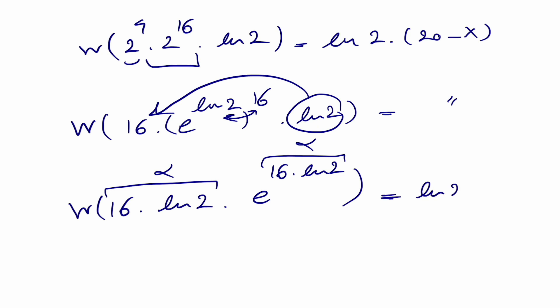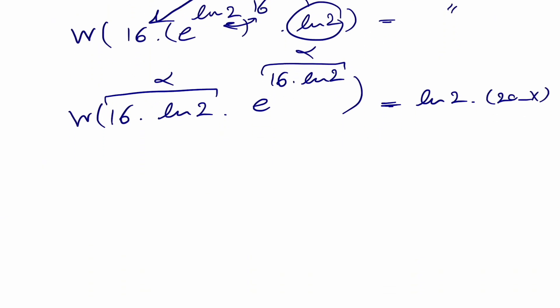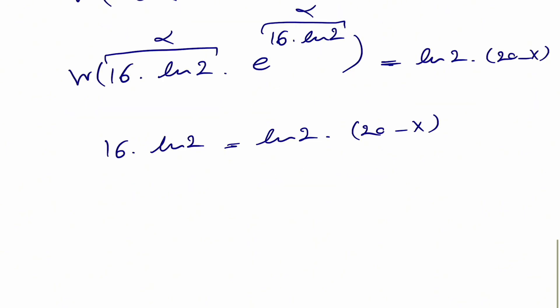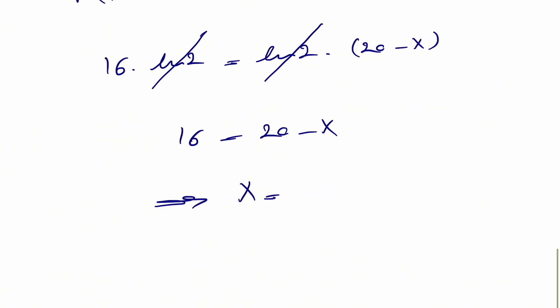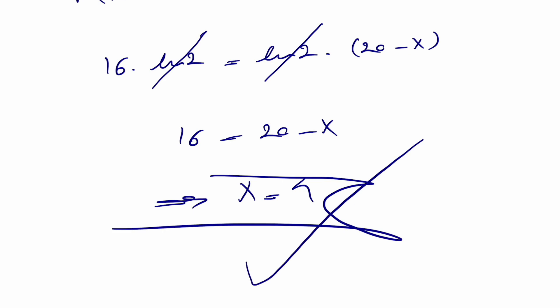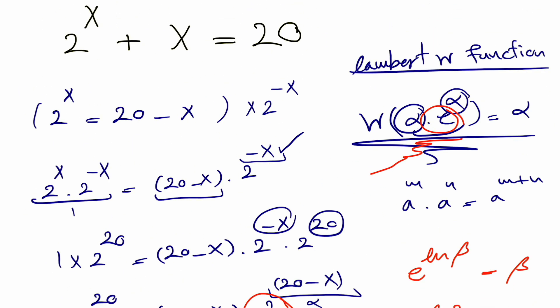So our equation becomes 16·ln2 = ln2·(20 minus x). Since ln2 appears on both sides, we can cancel it, giving the simple equation 16 = 20 minus x, so x = 4. That's the final answer. An alternative approach would be plotting 2^x + x and finding where it crosses y = 20, but that's not easy to do precisely.